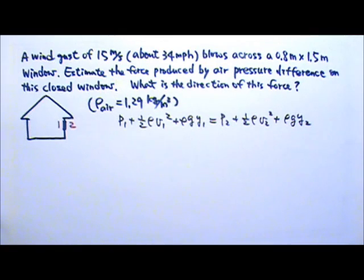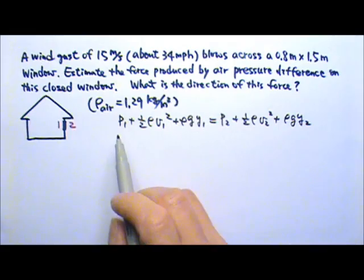We have a flowing fluid, so I'm going to use Bernoulli's equation. I'm going to use 1 for the inside of the house and 2 for the outside of the window. In this problem, we don't really have a flow of air traveling from 1 to 2, but we can still use Bernoulli's equation to estimate the pressure difference on the two sides of the window.